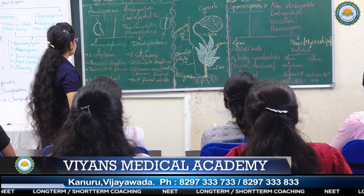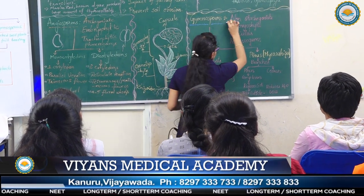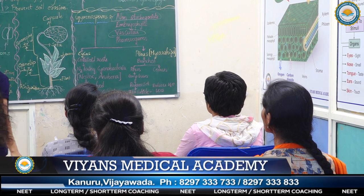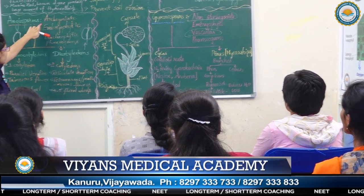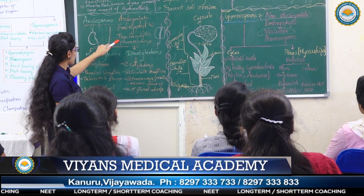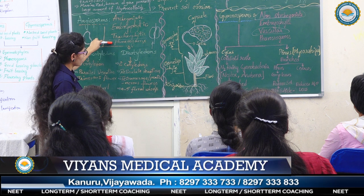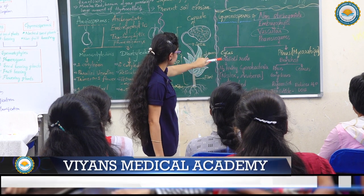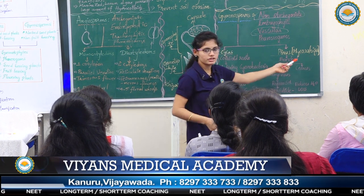Now let us discuss gymnosperms. Gymnosperms are non-archegonate and vascular. The differences between angiosperms and gymnosperms: angiosperms are archegonate while gymnosperms are non-archegonate; angiosperms are tracheophyte while gymnosperms are also vascular. Examples for gymnosperms are Cycas and Pinus. Pinus has mycorrhiza, which is a symbiotic fungal association.